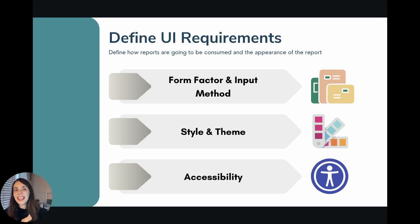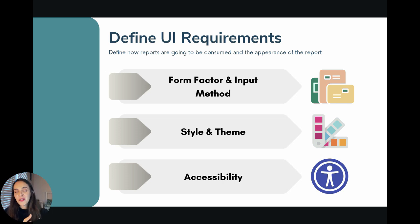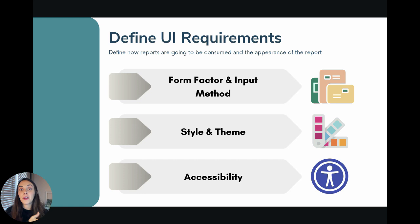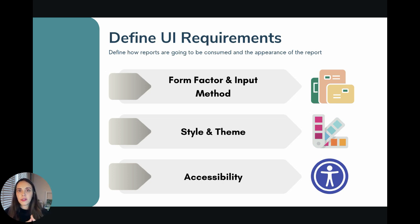And finally, accessibility. Accessibility is a topic that is not frequently discussed. The main question you need to ask your stakeholders is whether you need to worry about accessibility — any details about the users who are going to use your report — so that you make sure the report is accessible to those users.